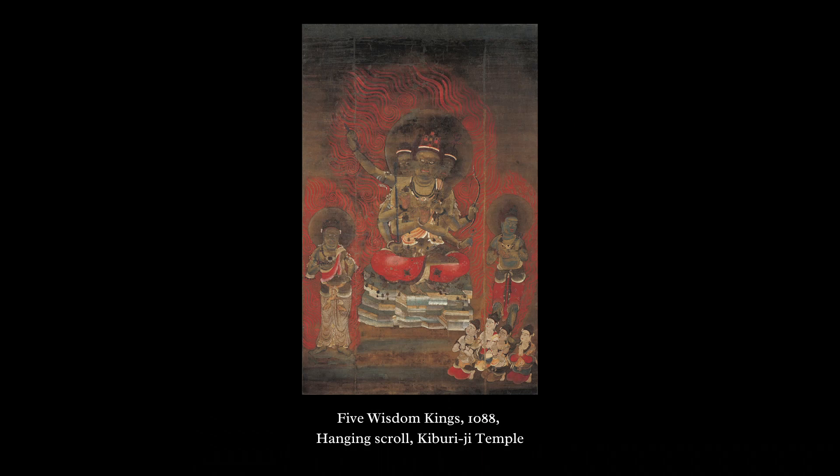Let's also see Fudō depicted in painting. We can find him among the paintings of the five great wisdom kings at Kiburiji temple, dated between 1080 and 1090. The deities are surrounded by flaming mandalas. According to scholar Tsuji Nobuō, these paintings have a somewhat archaic style, comparable to 9th century paintings. However, the artist did use some more advanced painting techniques — for example, a technique called Tericuma, which consists of highlighting parts of the body and garments in white to create the effect of light reflecting off of them.